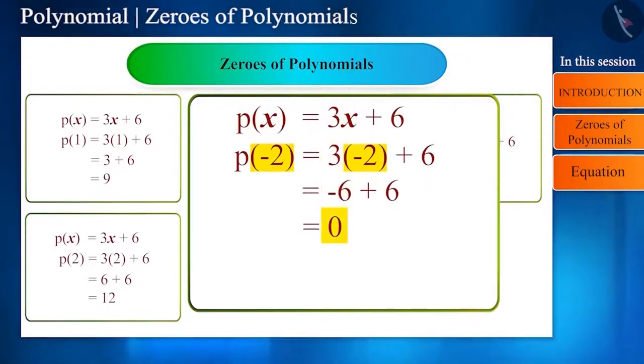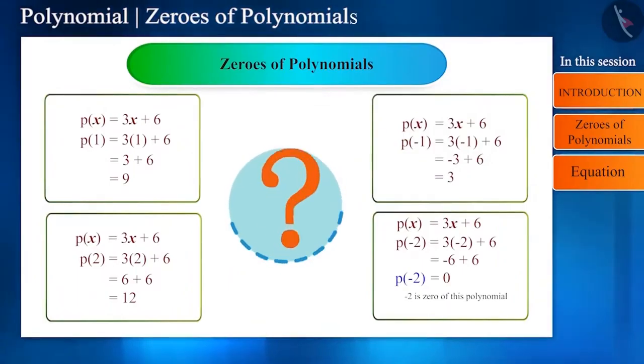That is, -2 is a zero of the polynomial 3x + 6. We can also write this as p(-2) = 0. Friends, can you think of another number for x so that the value of this polynomial is 0?